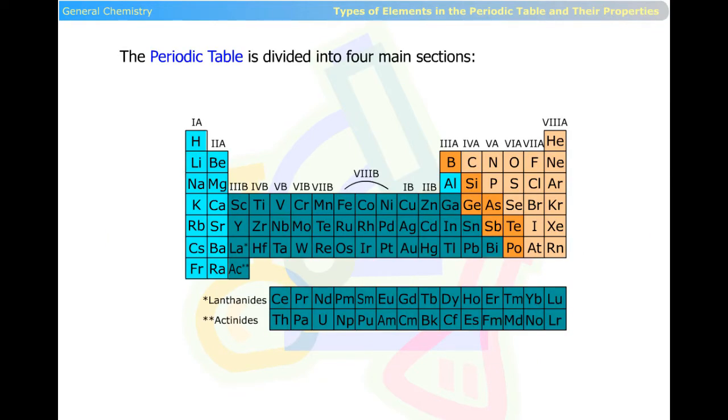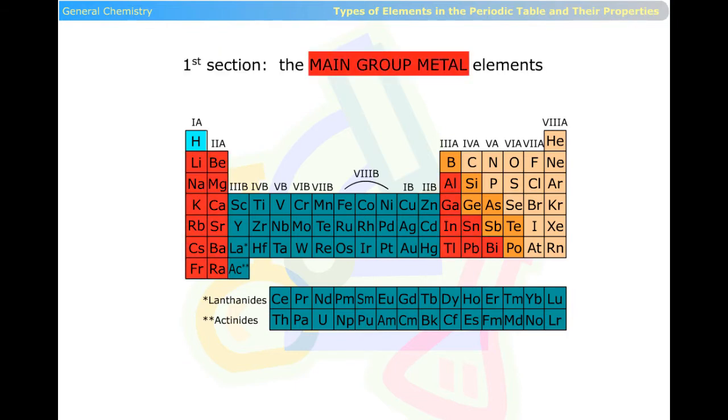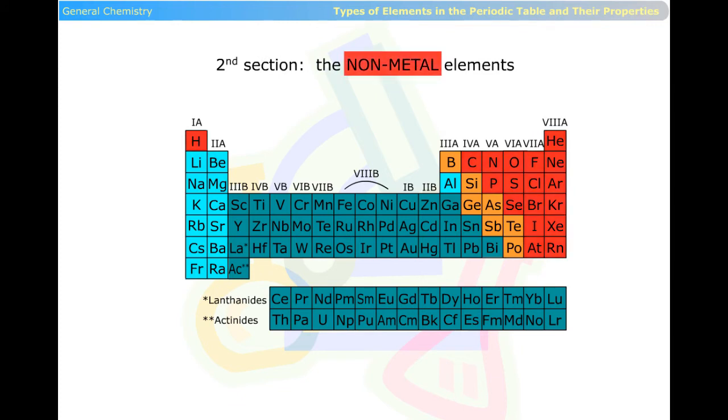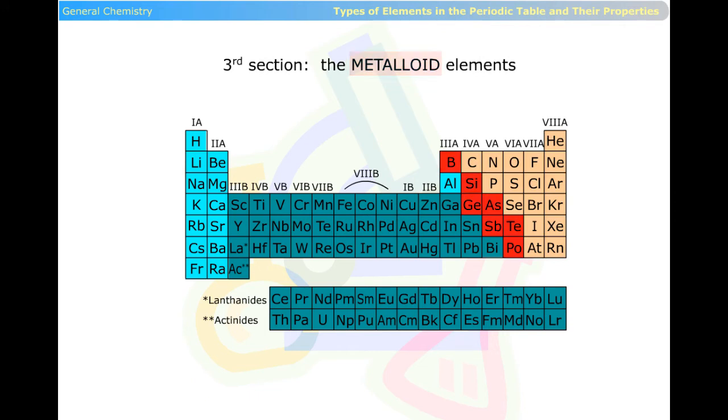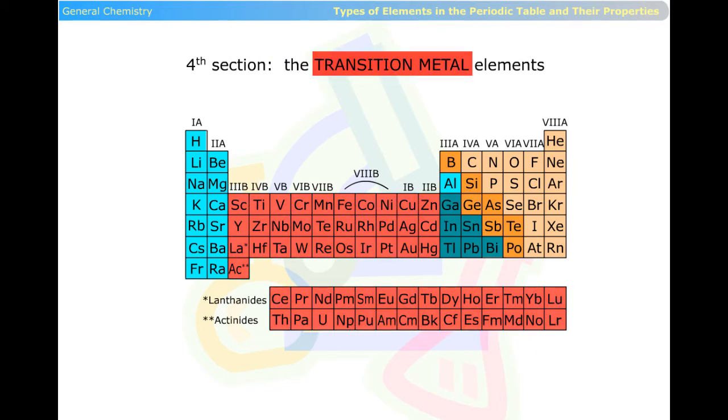The first section, the main group metal elements. The second section, the non-metal elements. The third section, the metalloid elements. The fourth section, the transition metal elements.